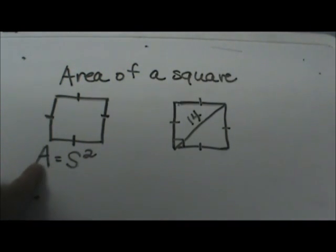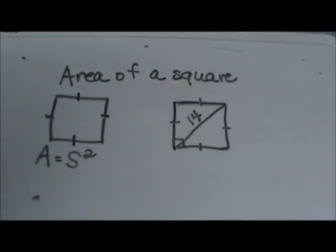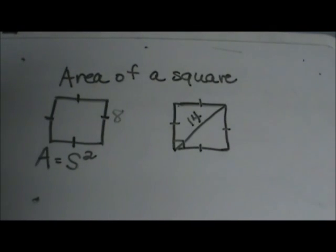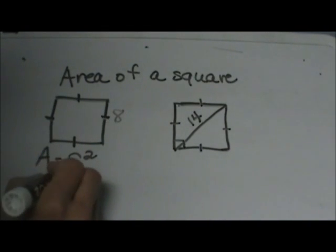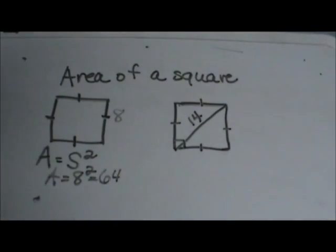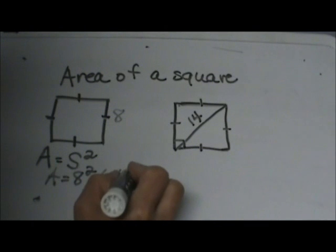To find the area of a square you just need to know the side because the formula for area is equal to the side squared. So let's give this side a length. Let's say that it's 8, so your area would just be 8 squared which is 64, and the units are always square units, so we would have 64 square units.